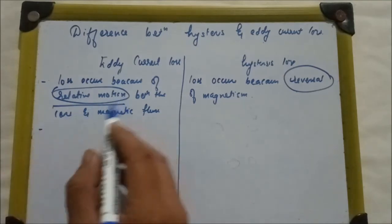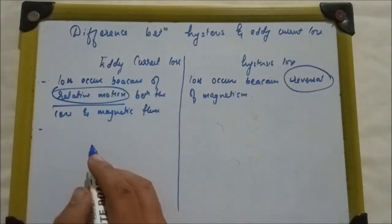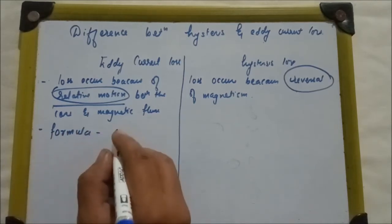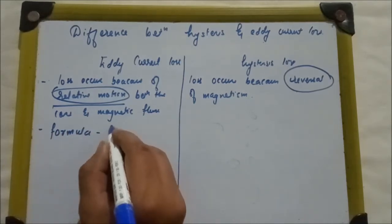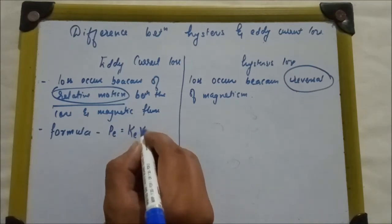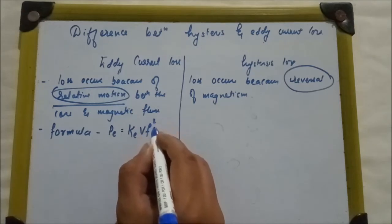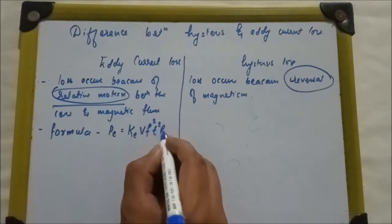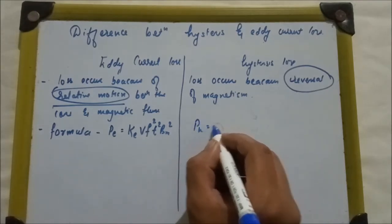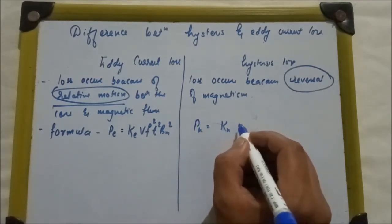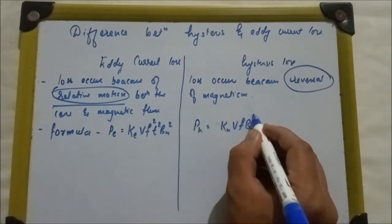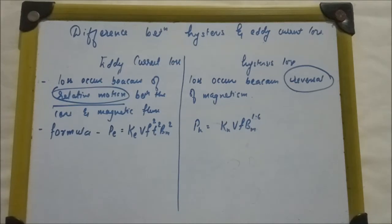So this is the definition of eddy and hysteresis loss. Now, what will be the formula? For eddy current loss, P is equal to KE V F squared T squared BM squared. The formula for hysteresis loss is KH V F BM raised to 1.6.